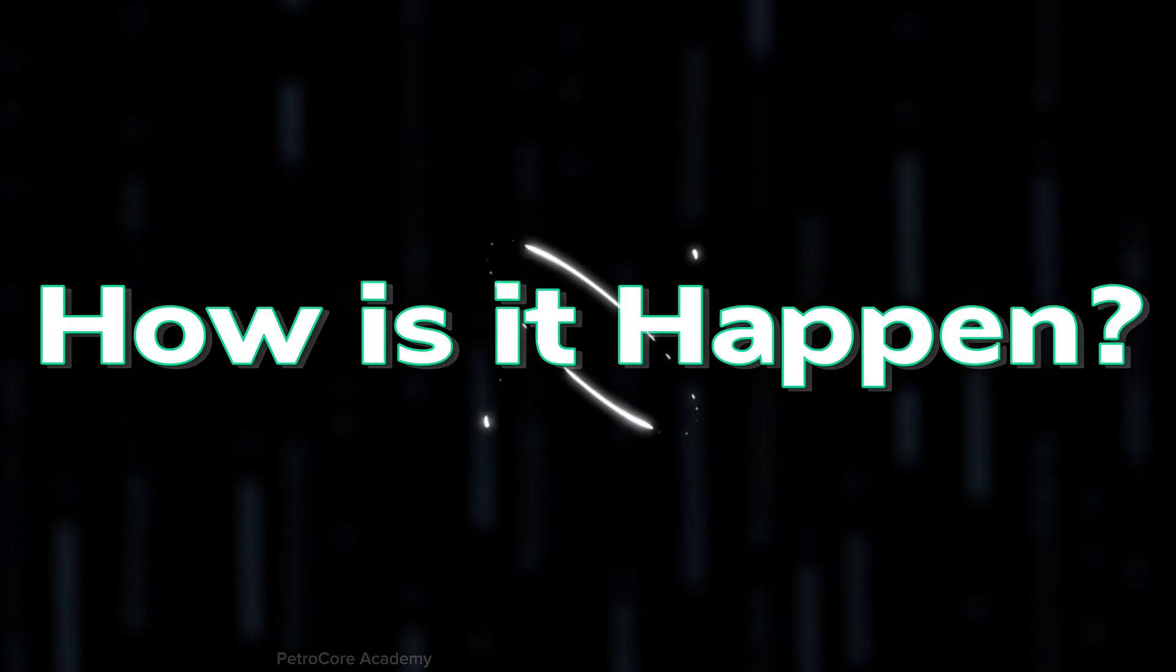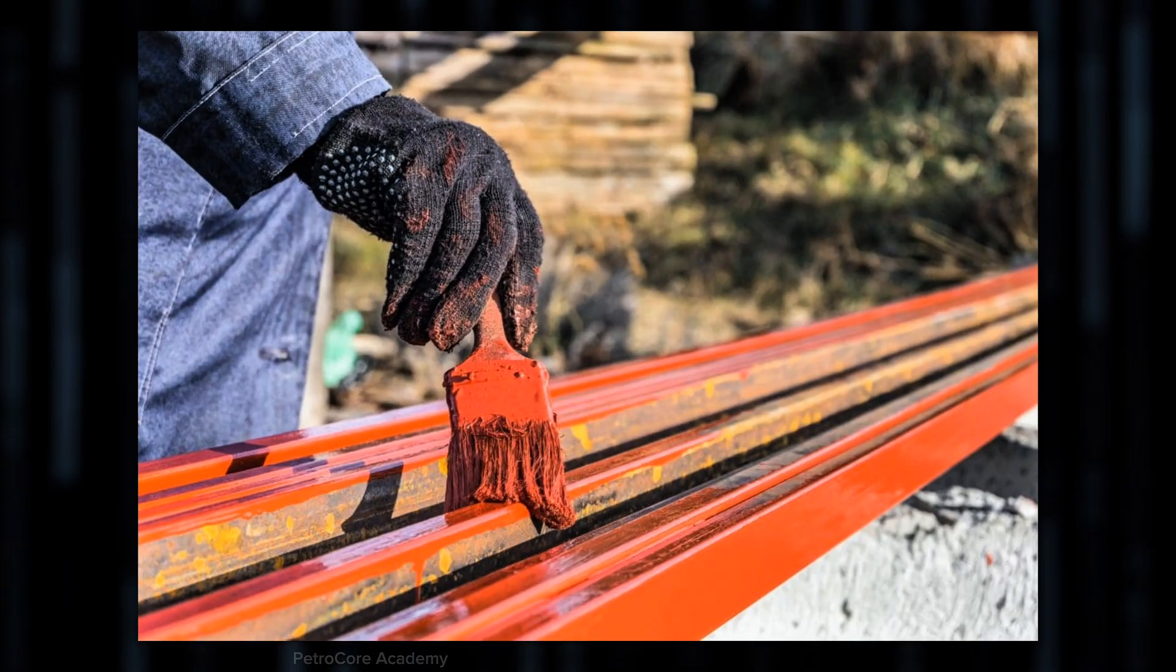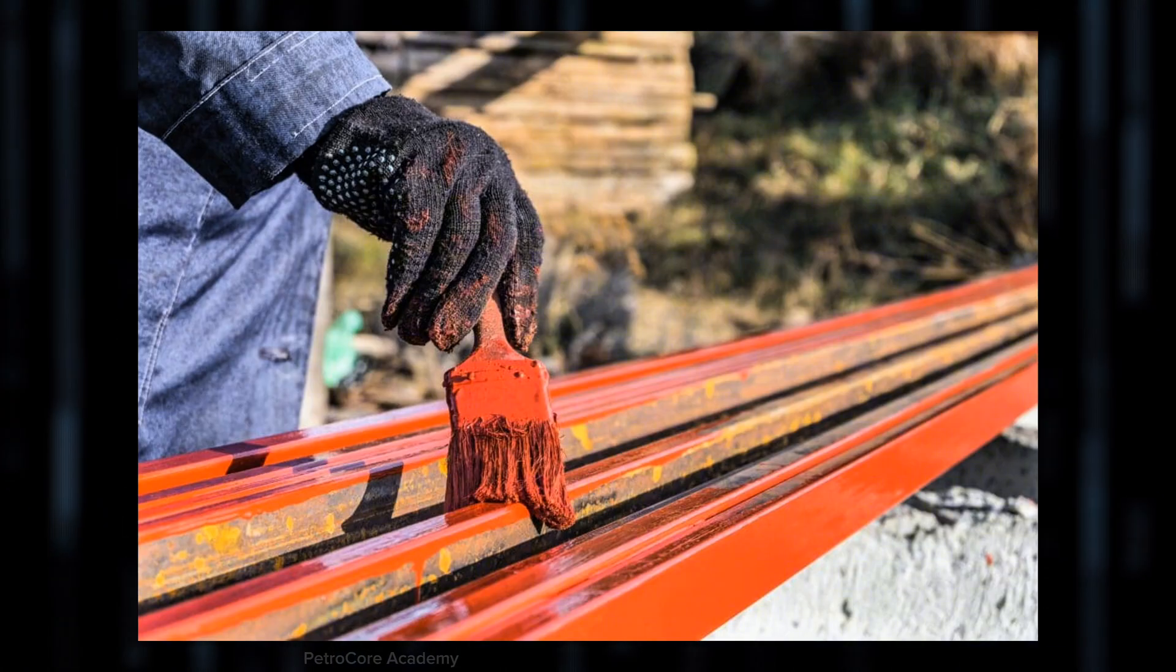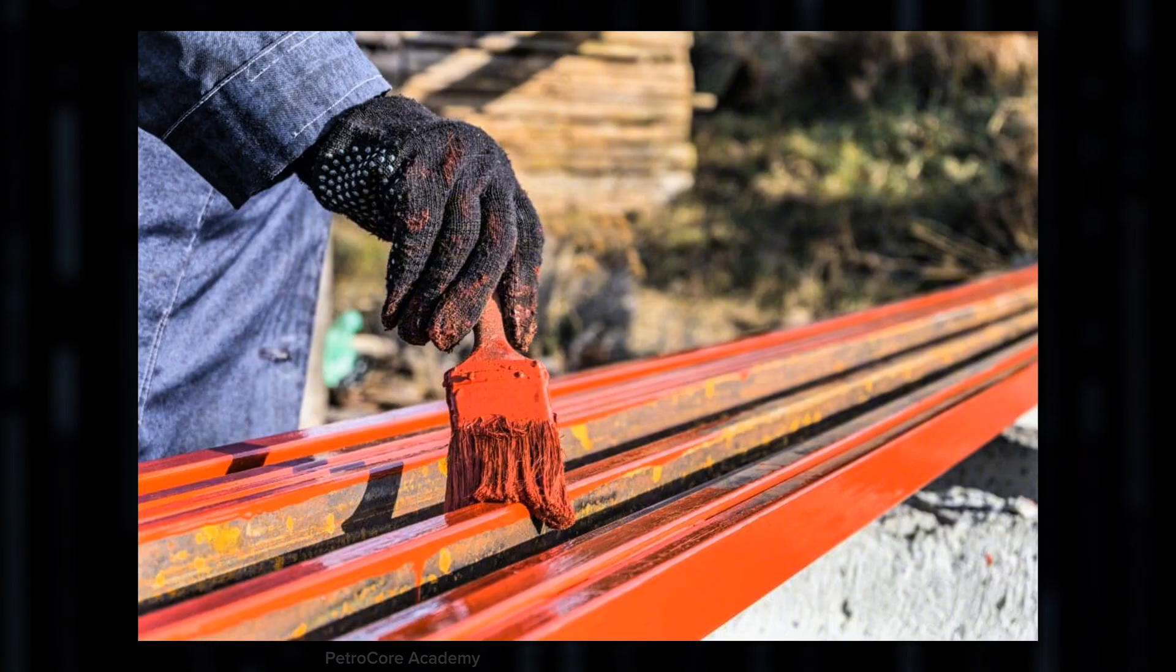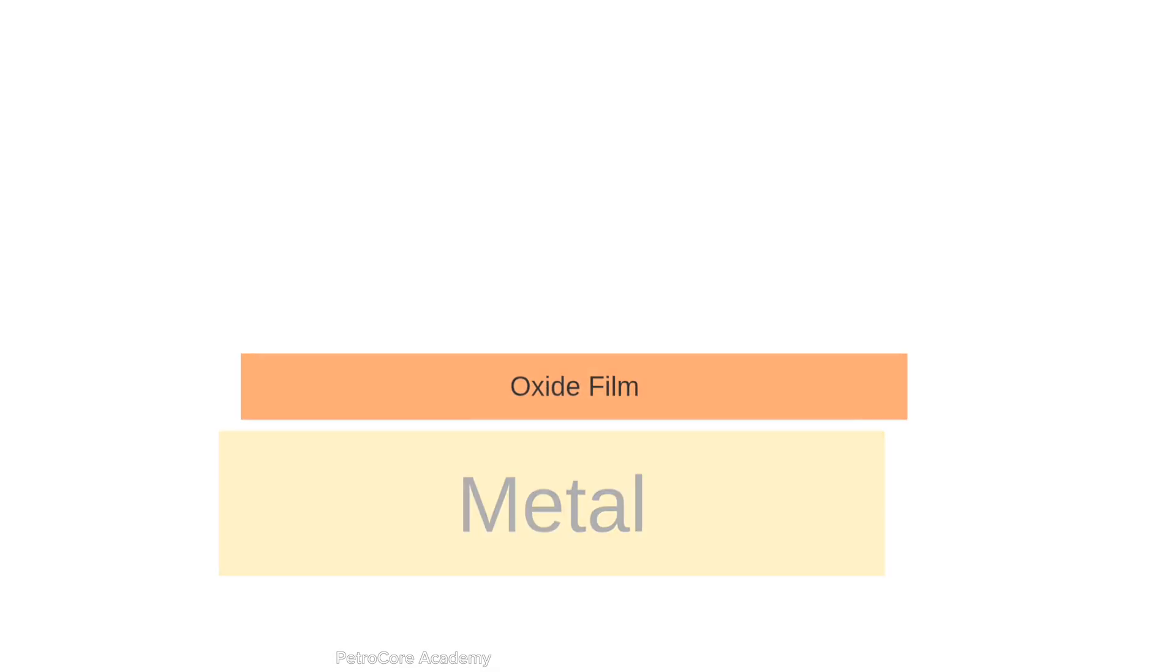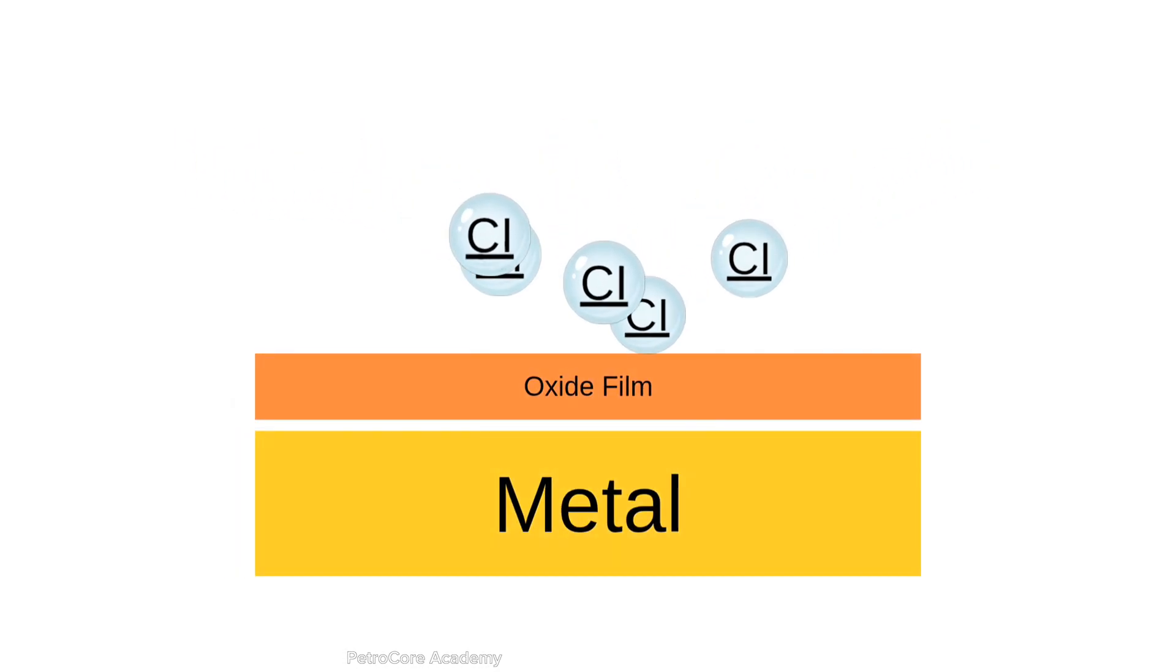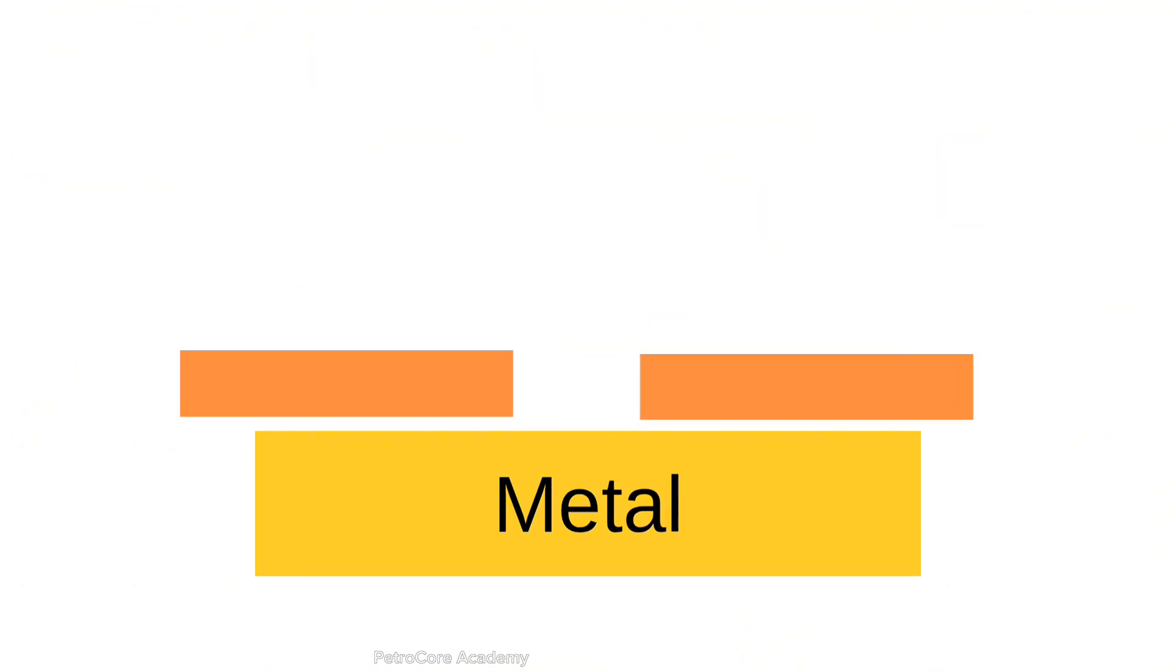But how does it happen? Great question. Most metals are protected by a passive oxide film, a kind of invisible shield. But under the wrong conditions - like exposure to chlorides, yes, looking at you salty seawater, or acidic environments - that shield breaks down.